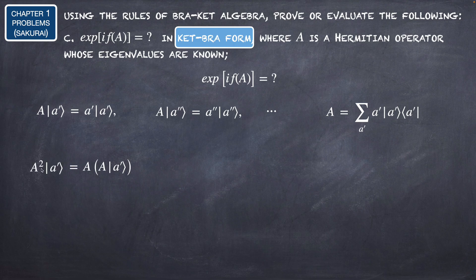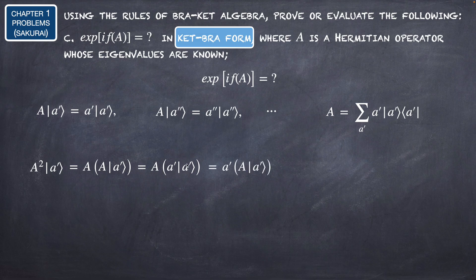We can write the operator A in ket-bra form as the summation over a' of the eigenvalue a' multiplied by the projection operator |a'⟩⟨a'|. Now let's calculate A² acting on |a'⟩: this equals A acting on A|a'⟩ = A acting on a'|a'⟩ = a' times A|a'⟩ = a' times a'|a'⟩ = a'² |a'⟩.